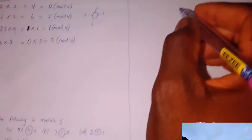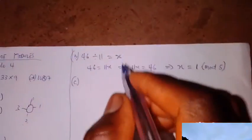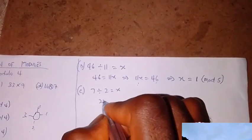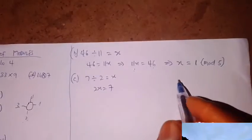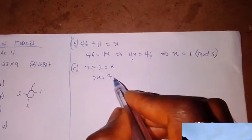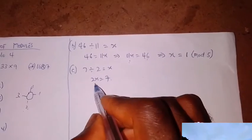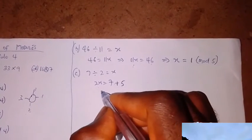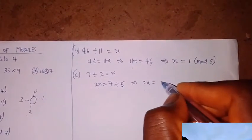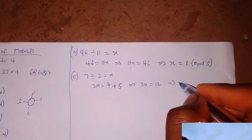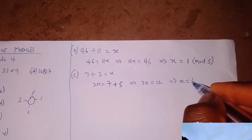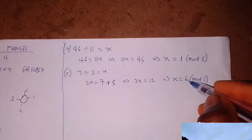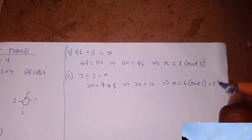For question C, we have 7 divided by 2. This equals x, which implies 2x equals 7. If I add the modulo 5 to the right-hand side: 7 plus 5 equals 12. So 2x equals 12, which implies x equals 6. Now, 6 in modulo 5 becomes 1 (since 5 goes into 6 once, remainder 1). So my answer is 1 in modulo 5.